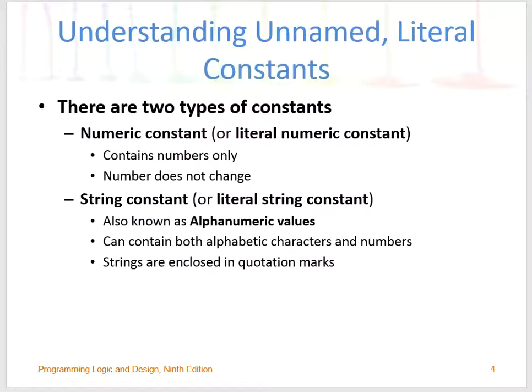Numeric constants are important because they are permanent — these are values that do not change. For string constants, these are alphanumeric values. They can contain both alphabetic characters and numbers, and they're enclosed with quotation marks. So if you want an actual string to appear on your screen, you might want to declare that as a string constant.